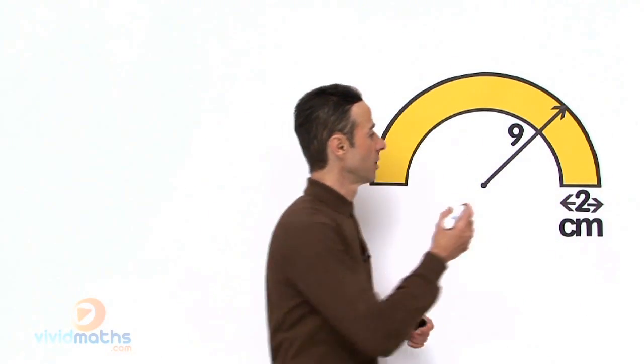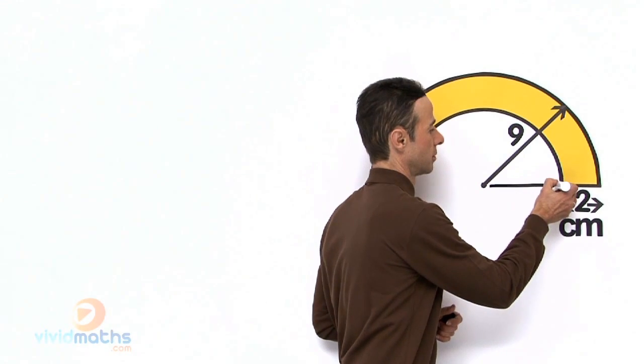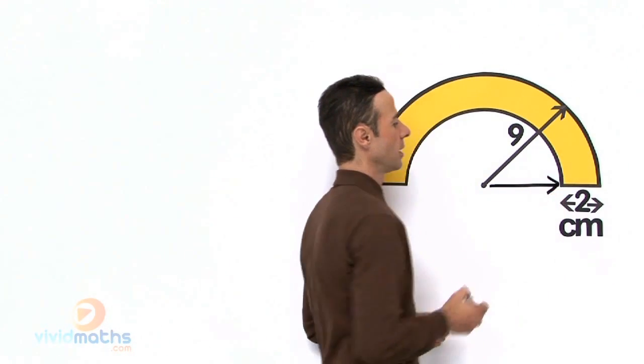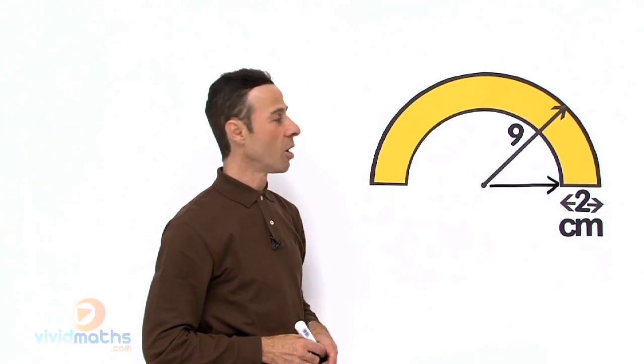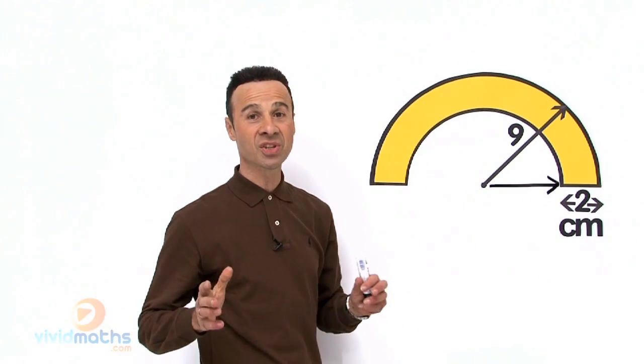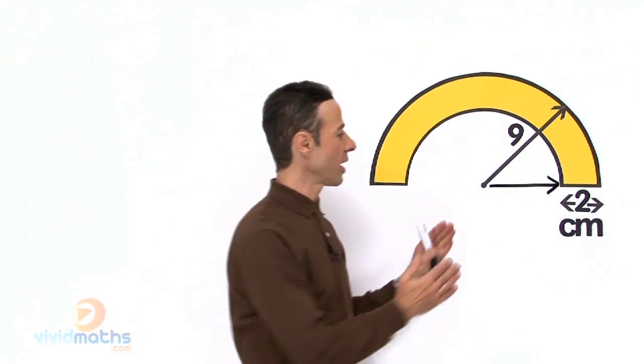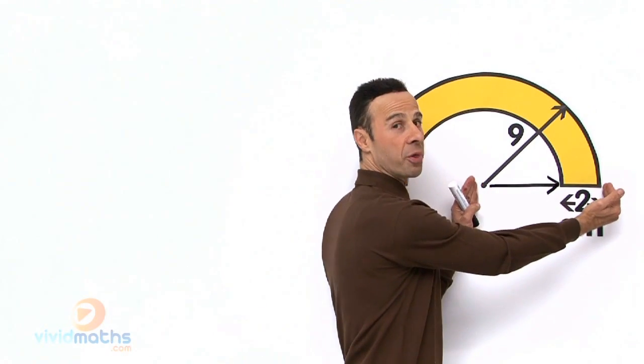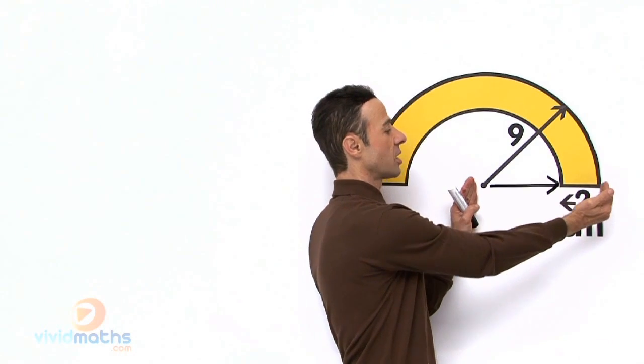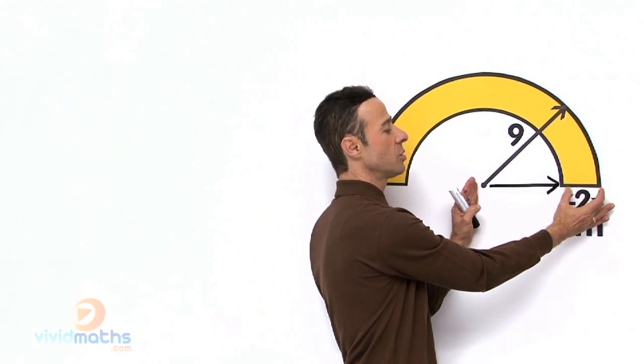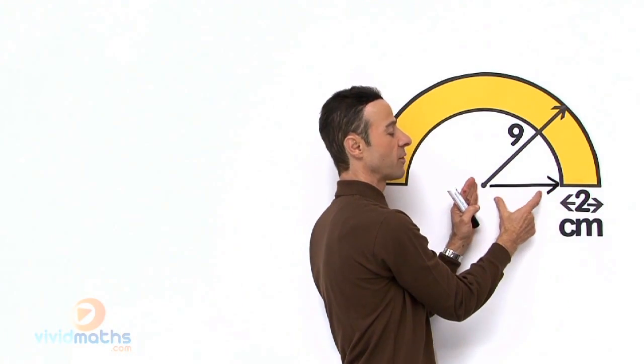Essentially what we are looking for is that radius right there. Okay so I wonder whether it is clear and you can see that 9 is the whole thing all the way to the edge, take away 2 so we go back 2 and that will leave us what is here.